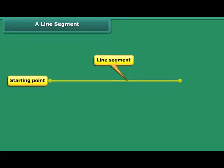Starting and ending of line segment are its end points. A line segment can be named by naming its end points. We can call this line segment as AB or BA.